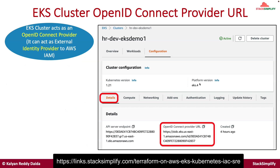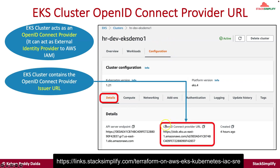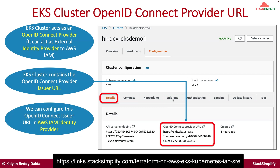Let's look at the EKS cluster OpenID Connect provider URL. Whenever you create an EKS cluster, if you go to the configurations tab and then the details tab, you will find an OpenID Connect provider URL. By default, your EKS cluster can act as an OpenID Connect provider, and it is enabled that way. From AWS IAM standpoint, identity federation is allowed, which means any external identity provider can be integrated with AWS IAM to access the AWS services.